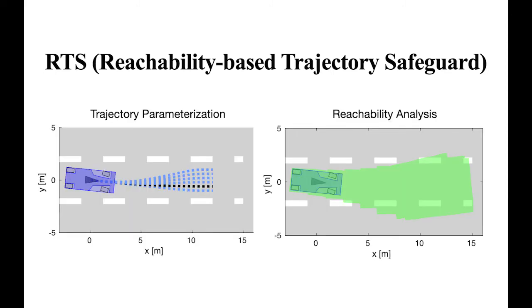To address this challenge, we propose RTS, reachability-based trajectory safeguard, which leverages trajectory parameterization and reachability analysis to ensure safe motion planning and control during training and runtime.